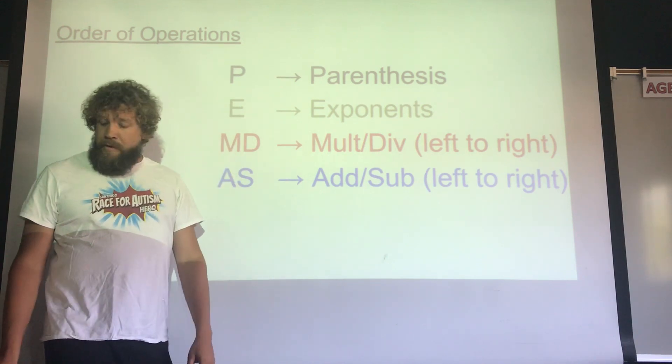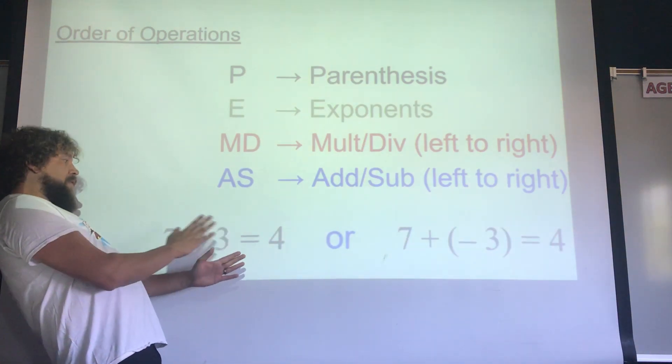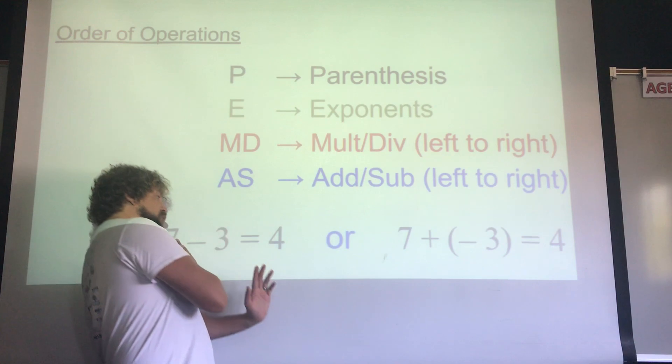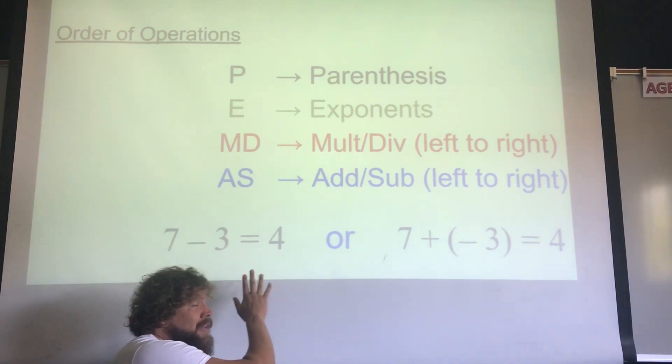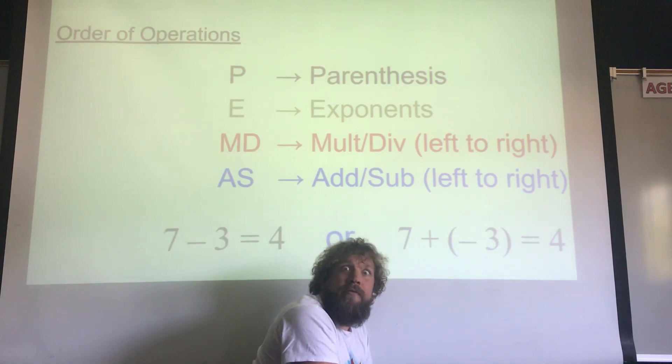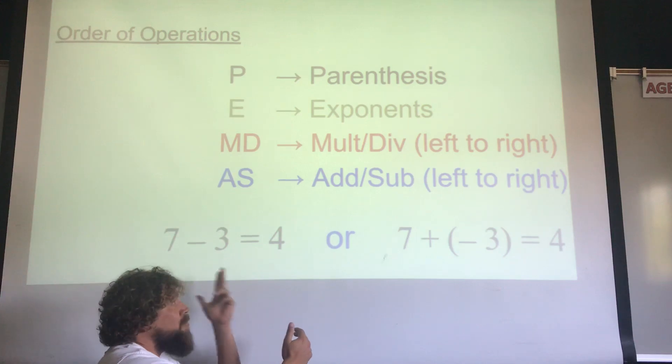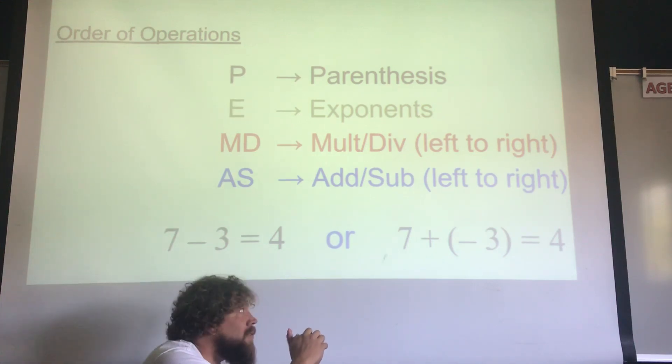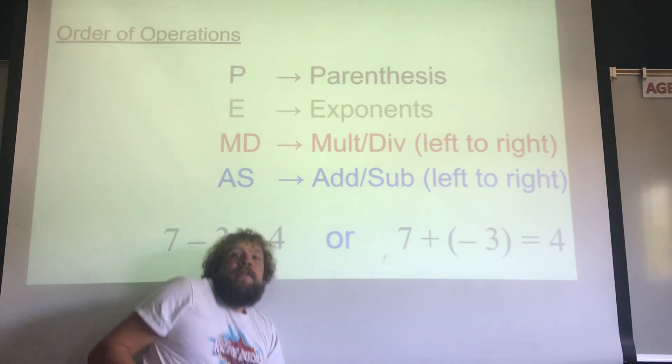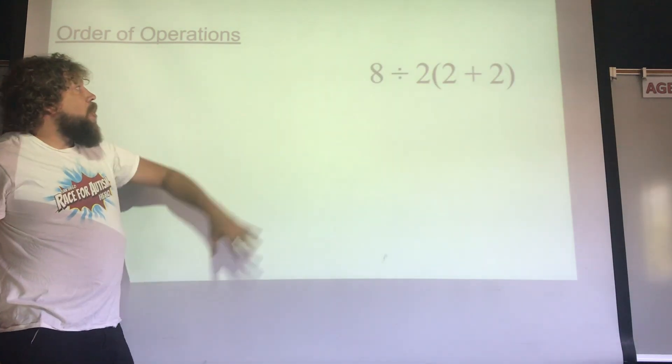So if it comes down to a multiply or divide, you just need to see what comes first from left to right. Got a little example separate from the problem you really want to know about. If we're subtracting, seven minus three, that equals four, and that's the same thing as seven plus a negative three equaling four. So hopefully this helps you see that subtraction really is addition. It's adding negative things, but it's the same deal.